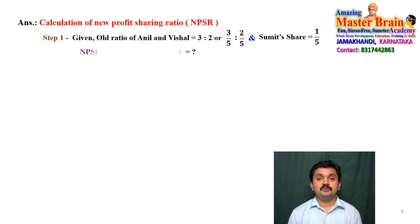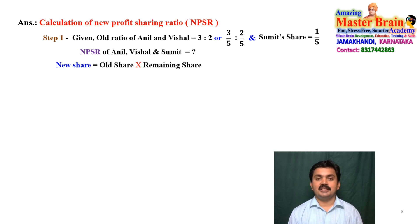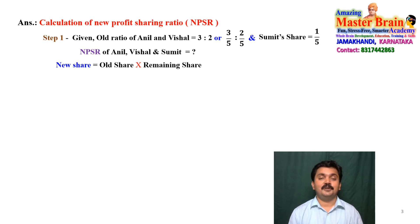What is the formula to find the new profit sharing ratio? New profit sharing ratio equals old ratio multiplied by the remaining share. We already know the old share of the old partners is 3:2. Now we need to find out the remaining share. For this, let us assume the total share of the firm is 1.